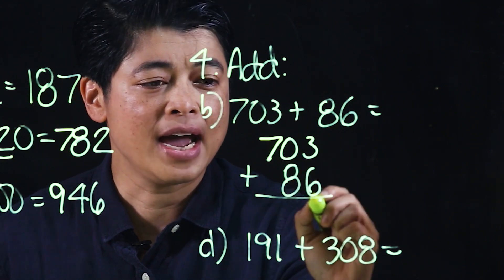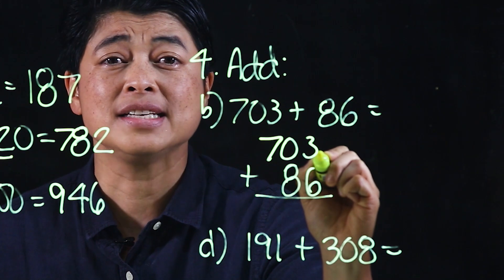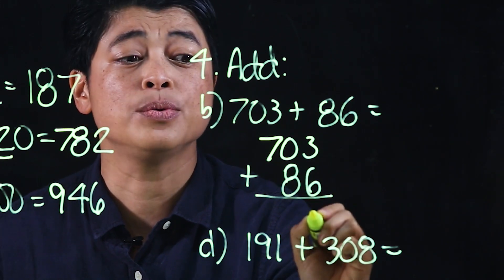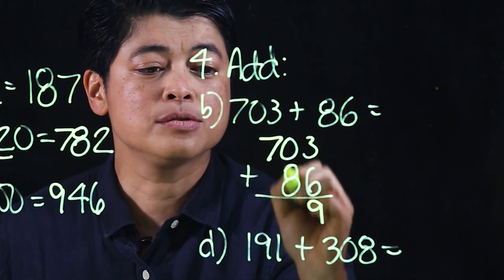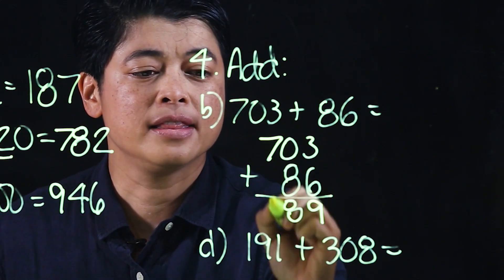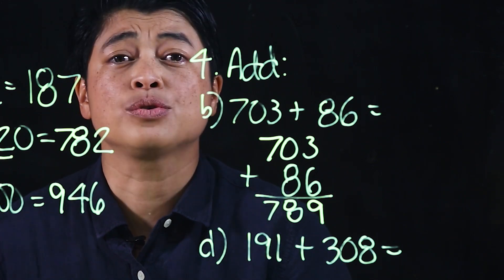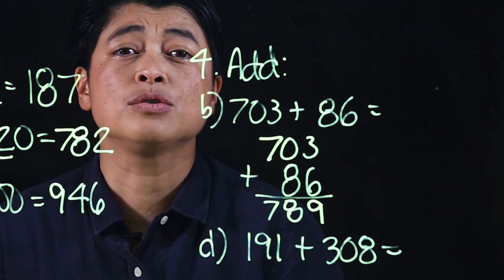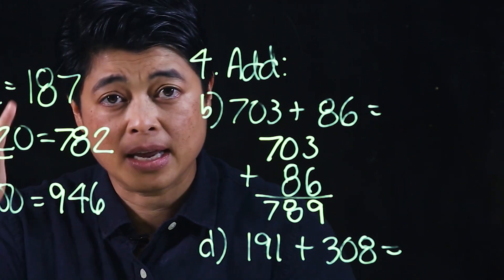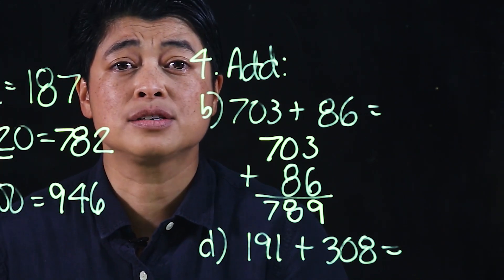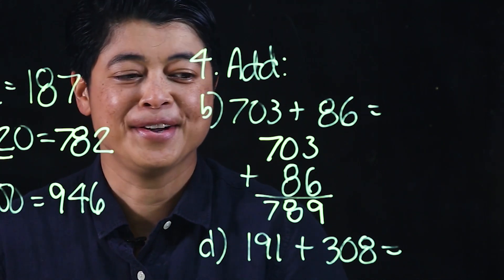Since this is simple math there's no regrouping yet. When we add, we start with the bigger number and add the smaller number — it's easier for the kids that way. So that means this will be nine, this will be eight, and this will be seven. If the kids need to use their fingers to count, that's fine, but we need to train them to start adding mentally. A good tool would be flashcards.